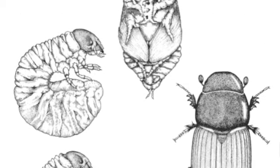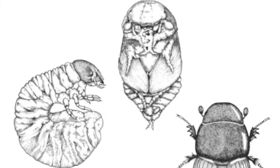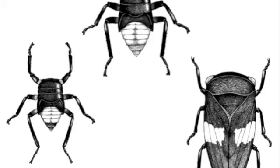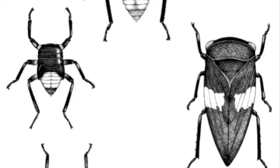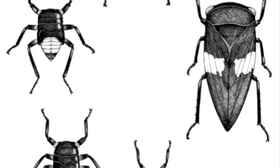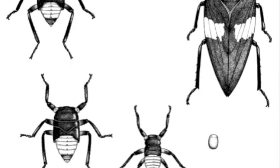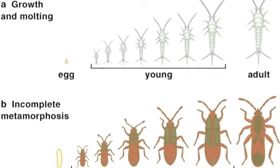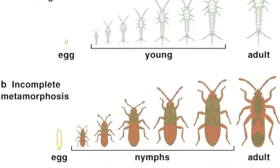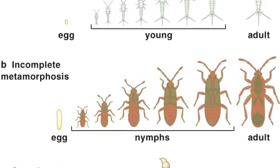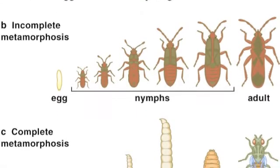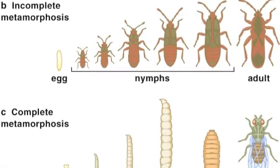The Corpora Allata becomes atrophic during the last larval or nymphal instar and stops producing Juvenile Hormone. This releases the inhibition on development of adult structures and causes the insect to molt into an adult, if hemimetabolous, or a pupa, if holometabolous.